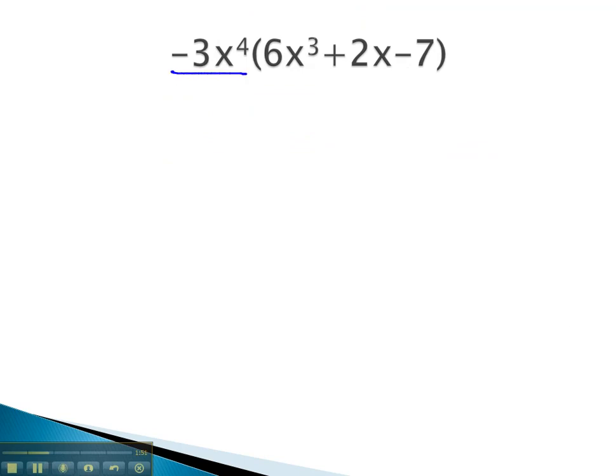In this problem, we have the negative 3x to the 4th in front of the parentheses. We begin distributing by multiplying by 6x³. This gives us negative 18, and then we add the exponents, giving us x to the 7th.